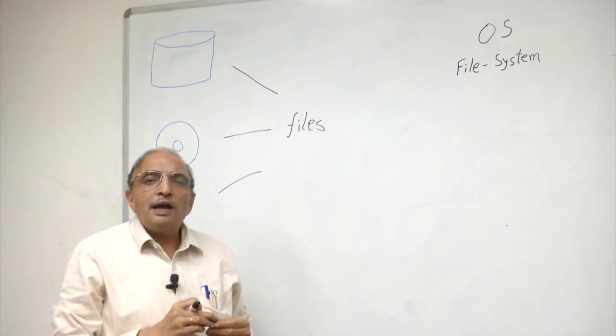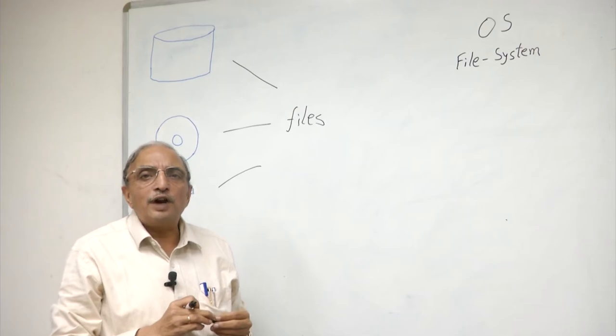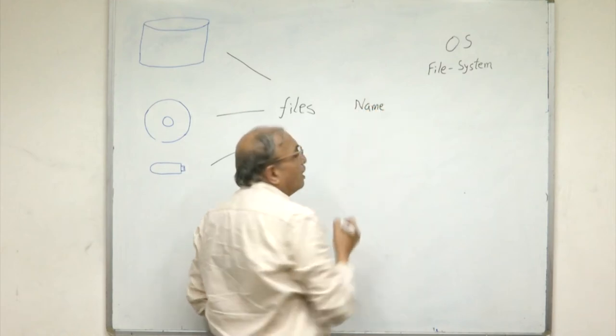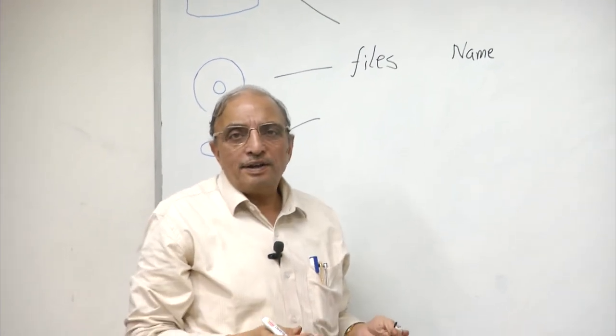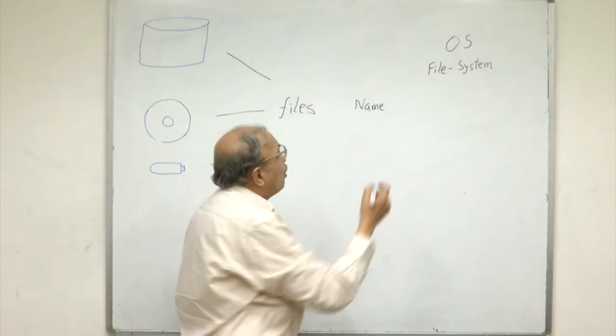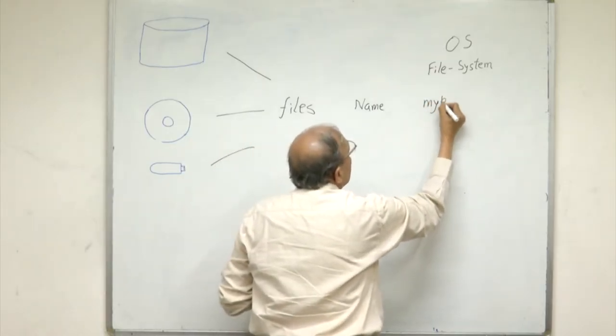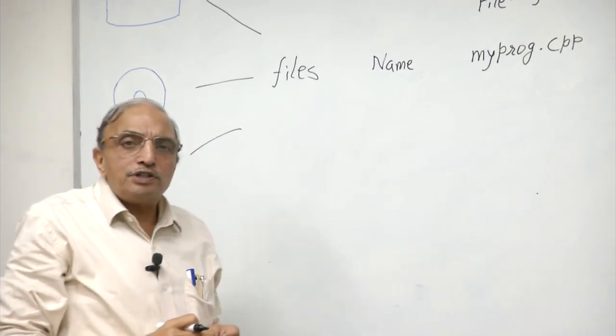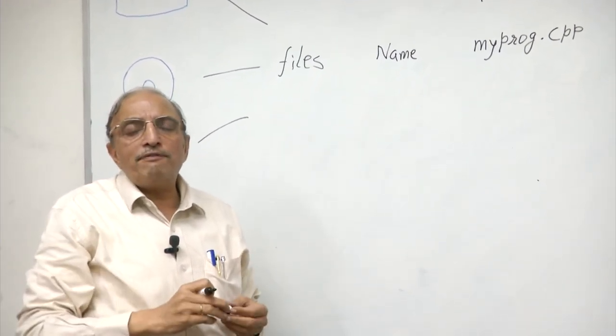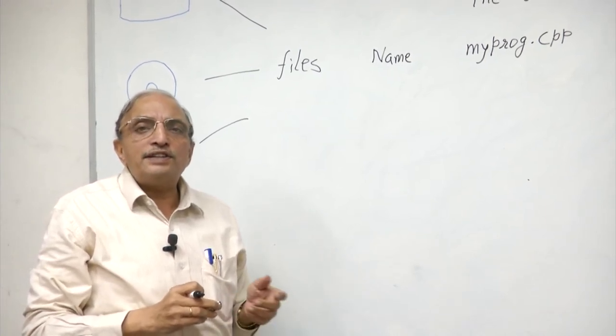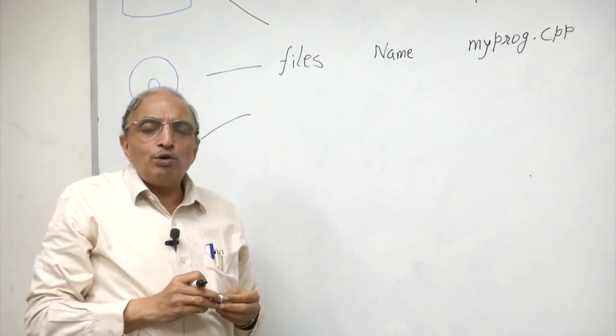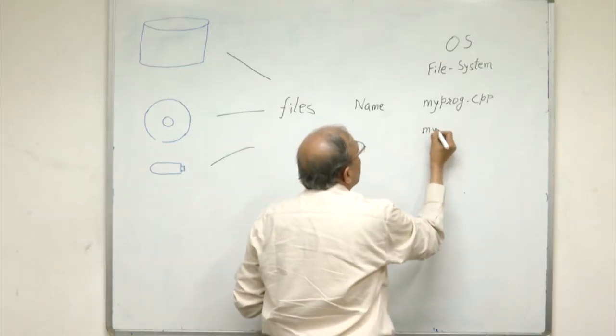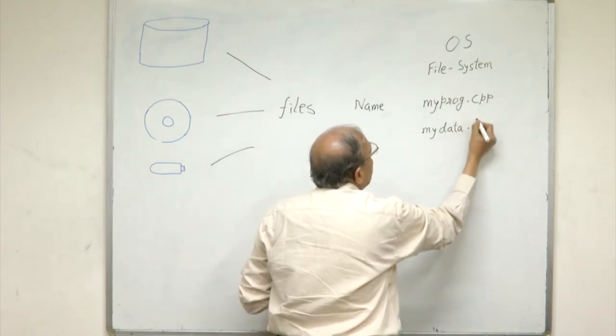You are all familiar with the basic organization of files on external devices. For example, you know that each file has a name. The C++ programs which you write are themselves stored in text files which are typically called by names such as myprog.cpp. It is possible to have a text file, for example, a file which you prepare using a notepad or any text editor. These files are typically named, for example, mydata.txt.